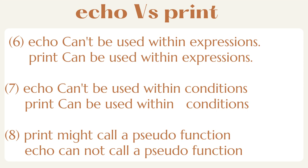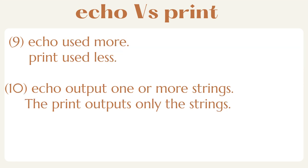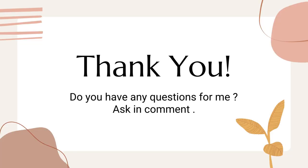Nine: developers use echo more, while developers use print less. Ten: echo outputs one or more strings, while print outputs only strings. See you next lesson. Thanks for watching — please like, share, and subscribe.